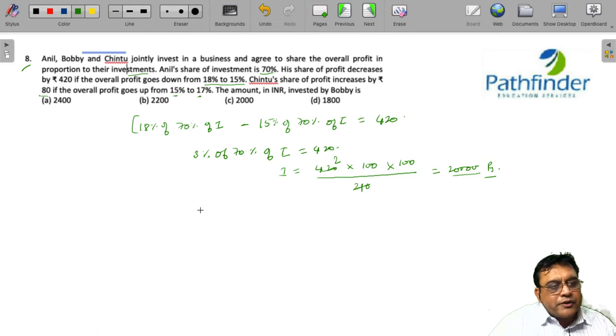That means when the profit increases by 2%, let us say Chintu's investment was C%, so 2% of C% of total investment must be equal to 80 rupees, because the profit goes up by 2%. So, 2 by 100 into C by 100 into I is equal to 80 and we are already given the value of I as 20,000.